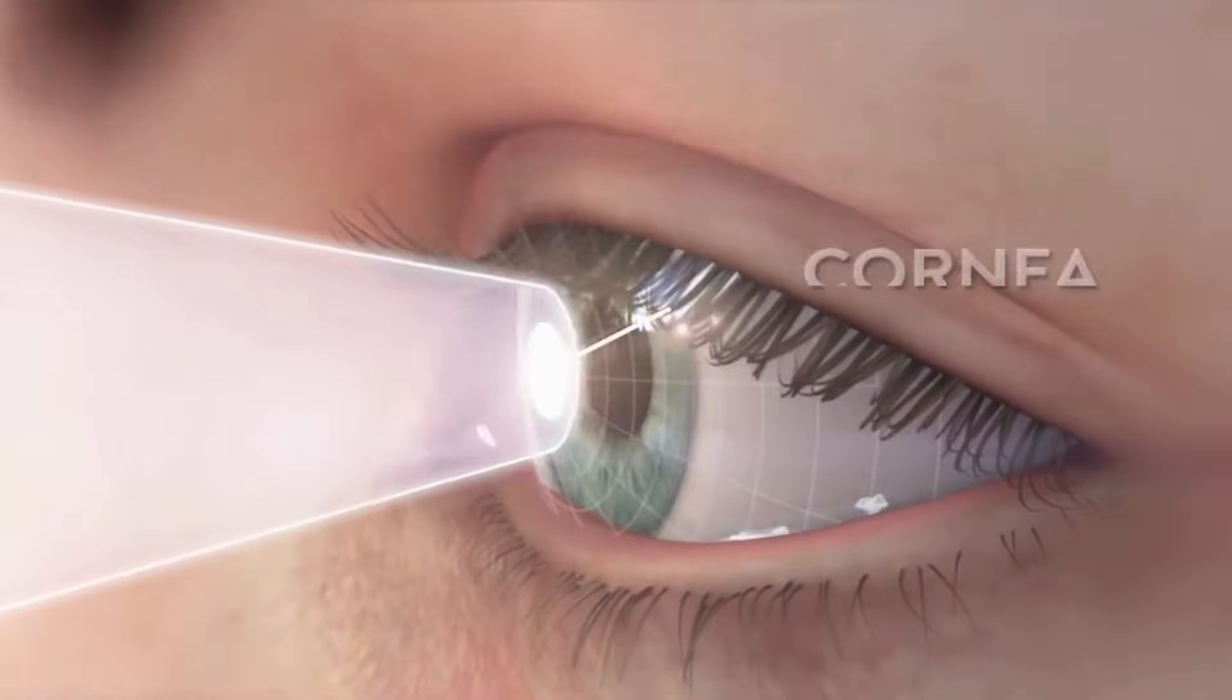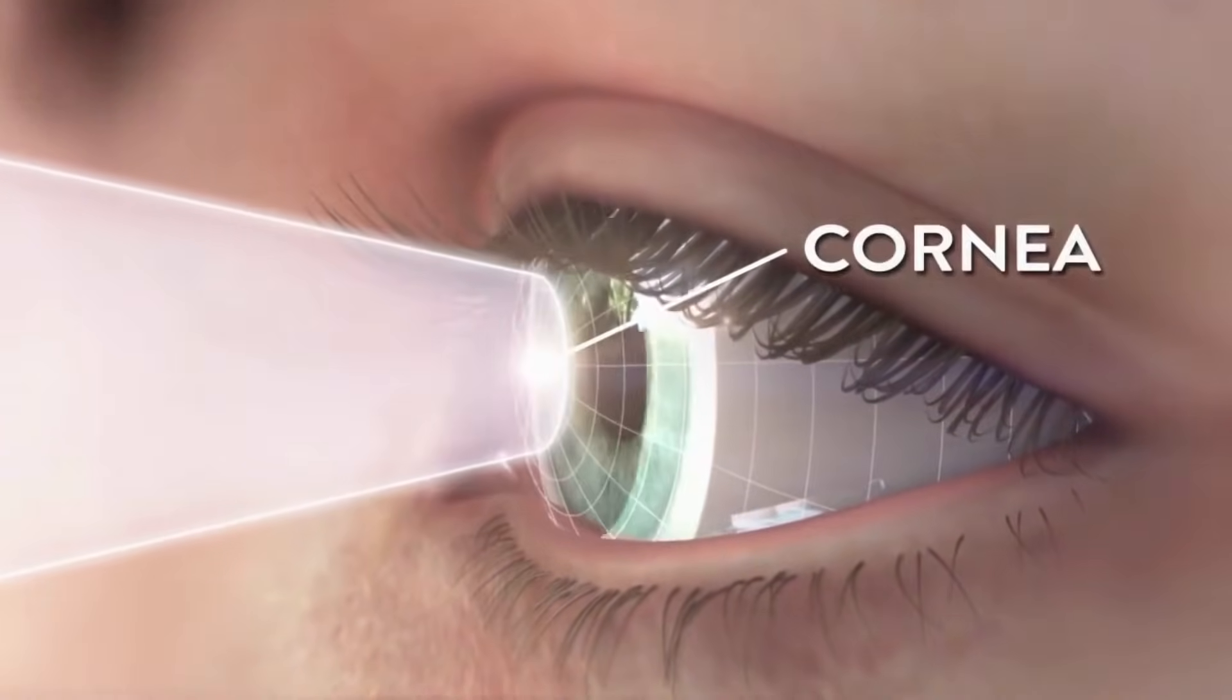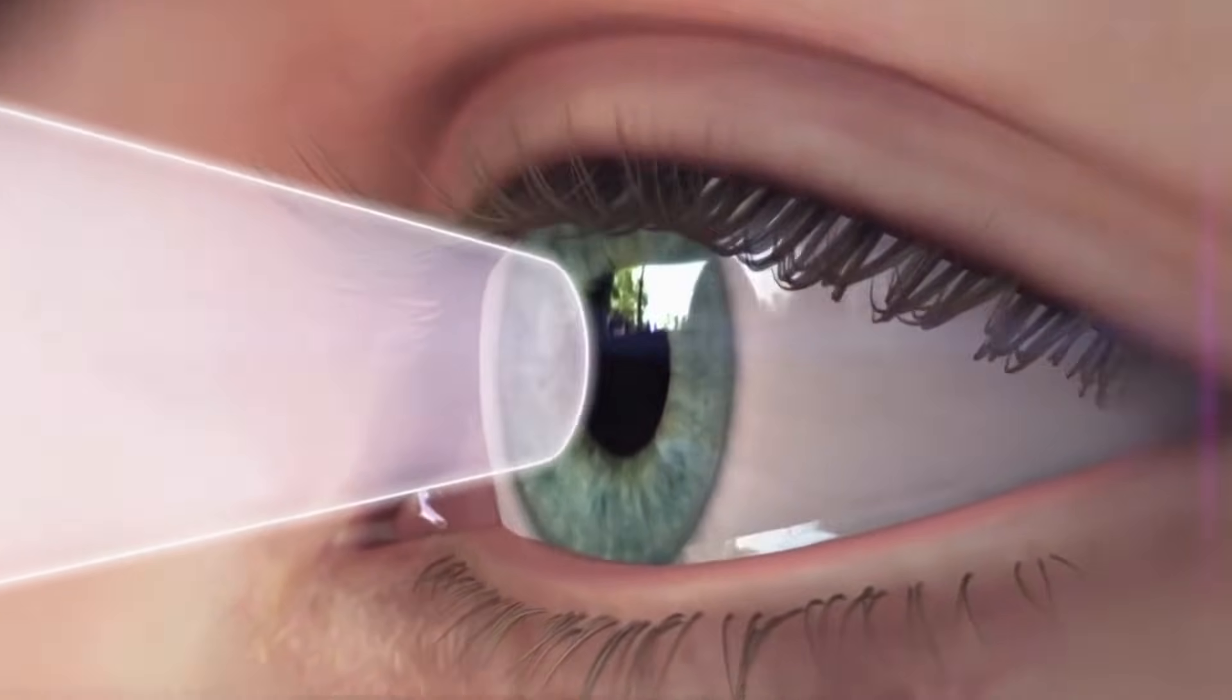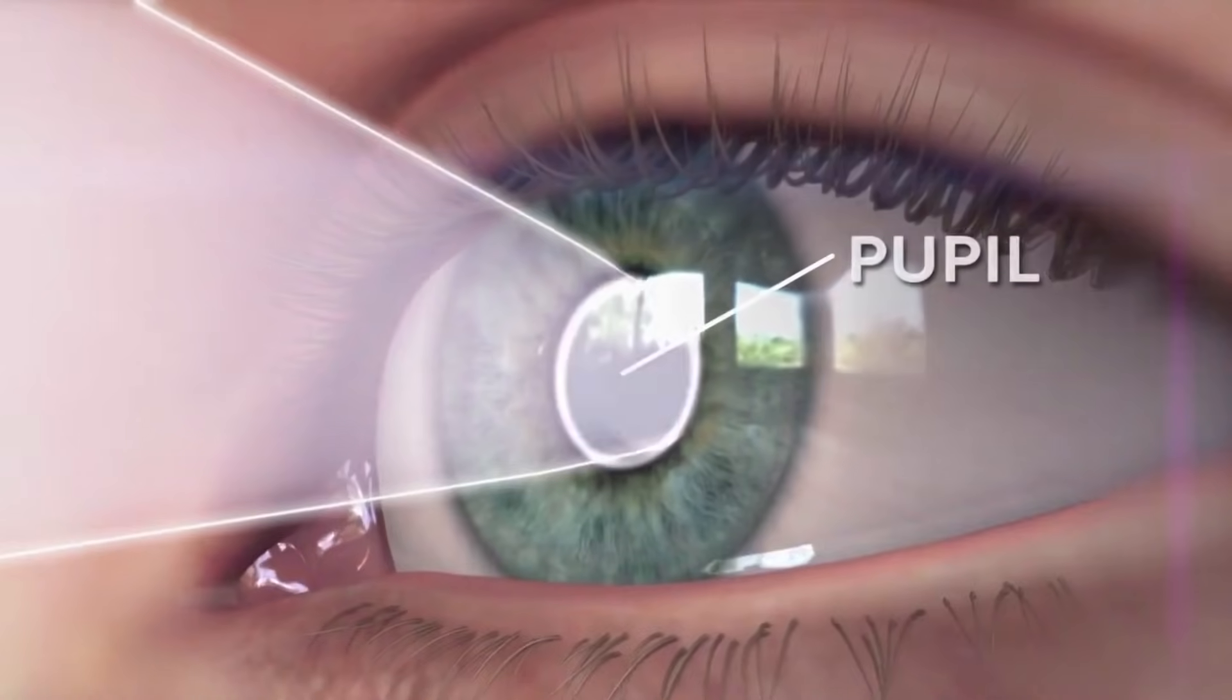Light passes into the eyes through the cornea, which is also called the windows of the eyes, and then through the anterior chamber into the pupils, the round opening in the center of the iris.